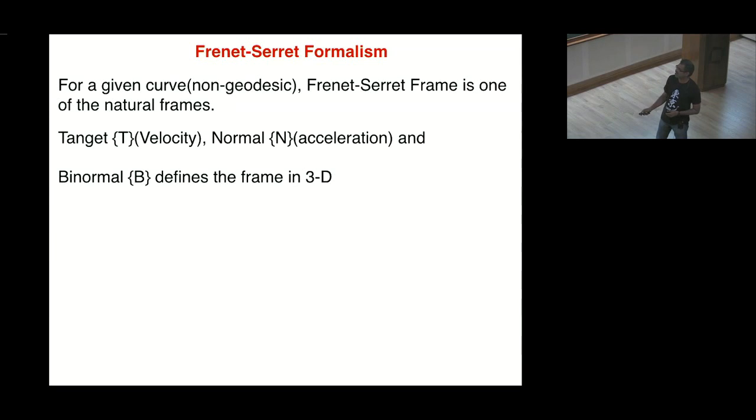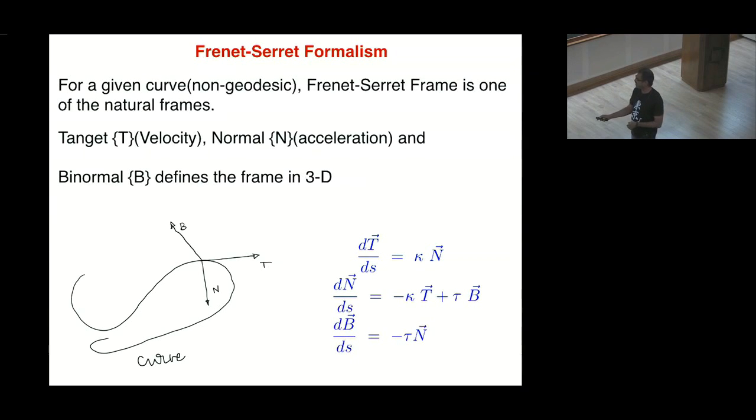You have tangent which is velocity, normal which you call acceleration, and binormal that defines the frame in 3D. The tangent is velocity, the normal is orthogonal to that and is the acceleration, given by simple equations. You can take a derivative of the normal, that is acceleration, and that requires another vector which is called binormal, which completely defines the frame. It always amuses me to talk about when I say frame being so fundamental to geometry.